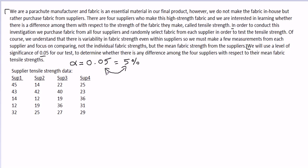We're going to use an alpha of 0.05 to determine whether there is any difference among the suppliers with respect to their mean fabric tensile strength. So our objective here is to just see whether there's any difference. This seems ripe for an analysis of variance.